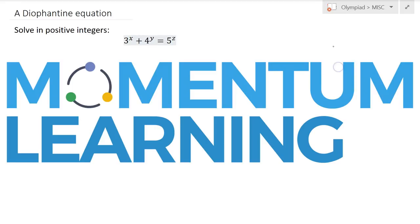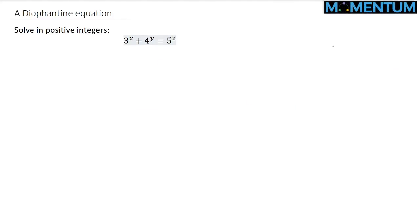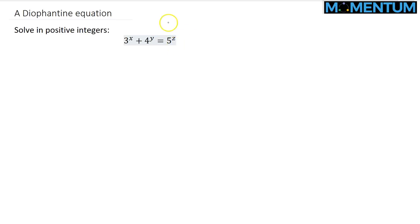Consider the following Diophantine equation. From the way it looks, this is very similar to Fermat's Last Theorem. However, in Fermat's Last Theorem the exponents were all equal, and this is not the case. So there must be a solution. One of the solutions clearly is the Pythagorean triple 3, 4, 5: 3² + 4² = 5² would work, but we'd be curious to find out if there are any other solutions.